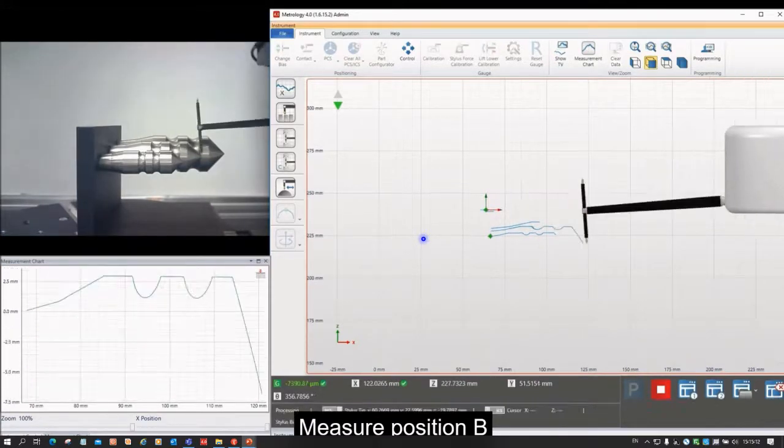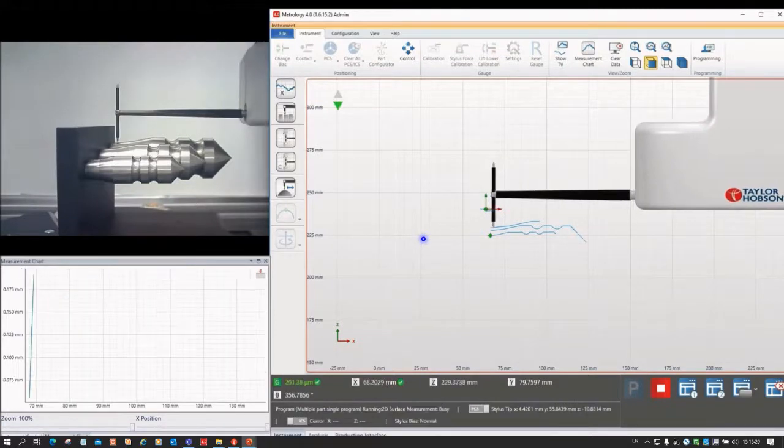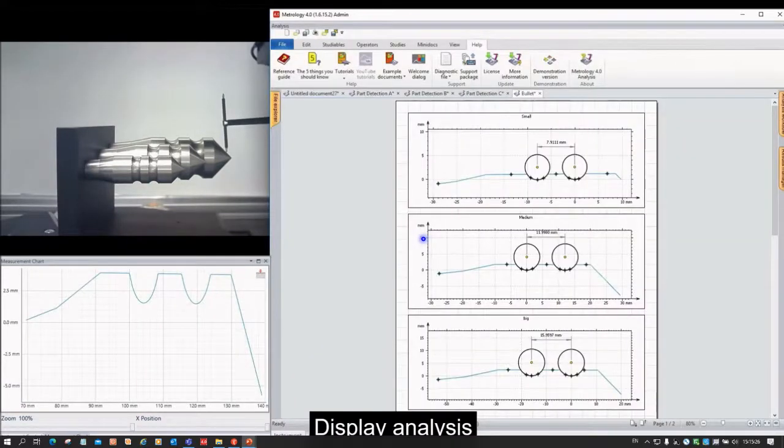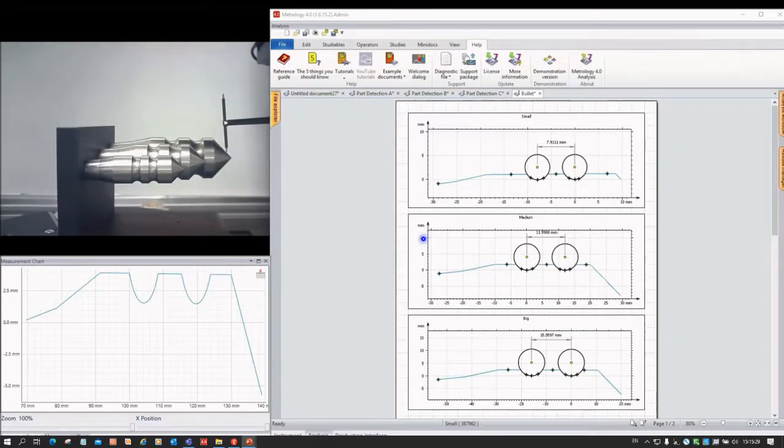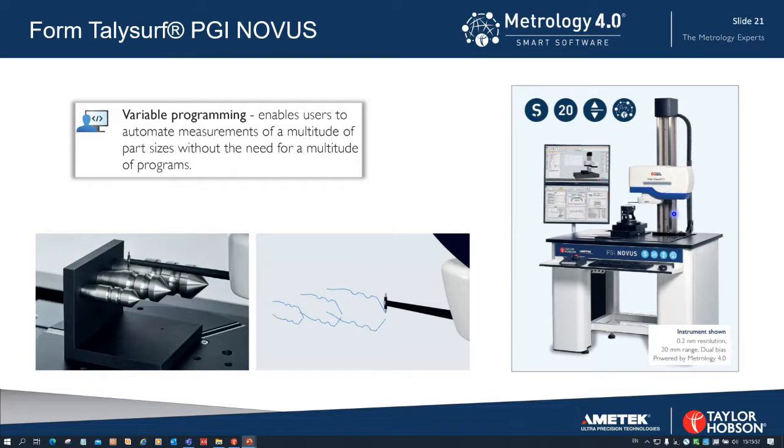Once all the results are in, they can be automatically analyzed, and you can see in the table there that we've looked at the pitch between two gothic arch surfaces. In each case we fitted a ball to these gothic arch surfaces, and we're looking at the distance between the centers of the balls. Take that a step further and also measure, for example, the roughness, the radius, or the angle and so on. So a very powerful way of using variable programming which enables users to automate measurements of a multitude of parts sizes without the need for a multitude of programs.